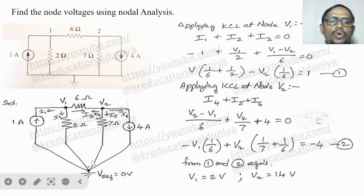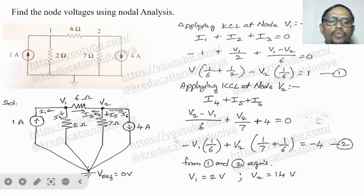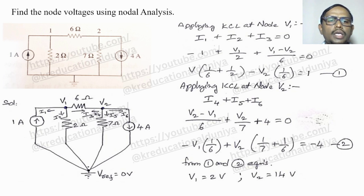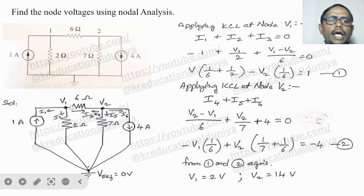One node will be considered as the reference node, so V reference equals 0 volts. The remaining unknown nodes are node 1 and node 2, named as V1 and V2.